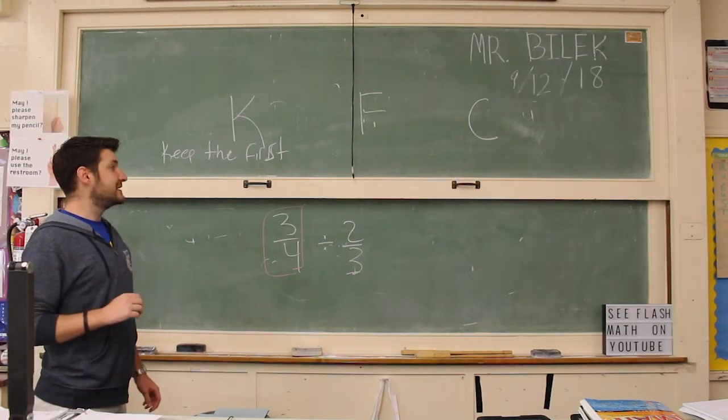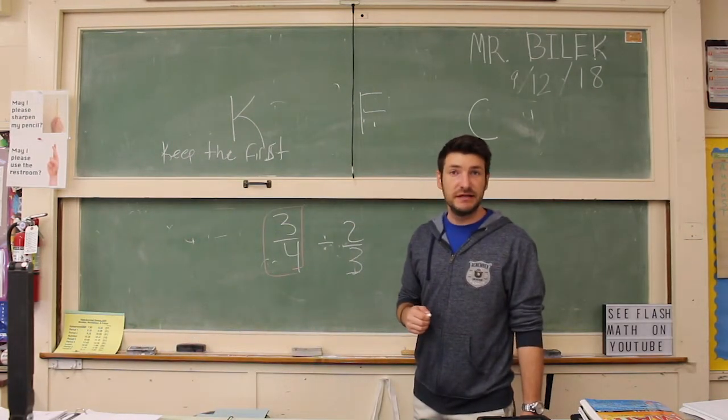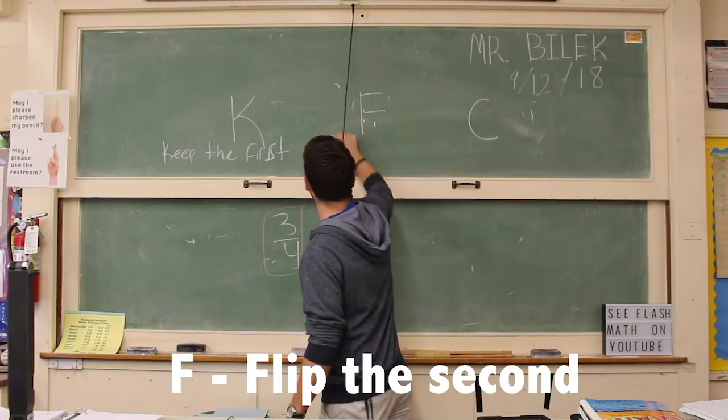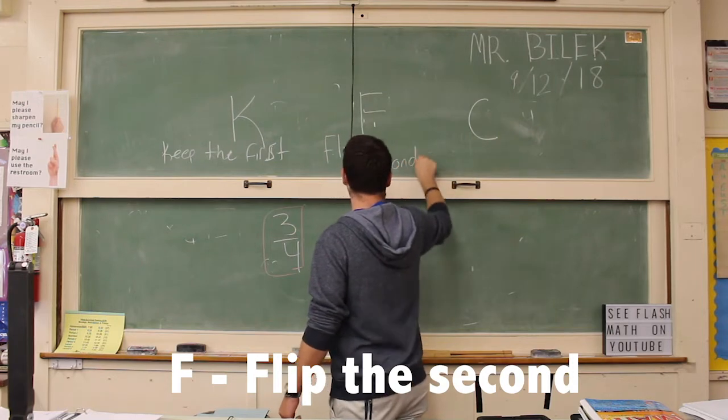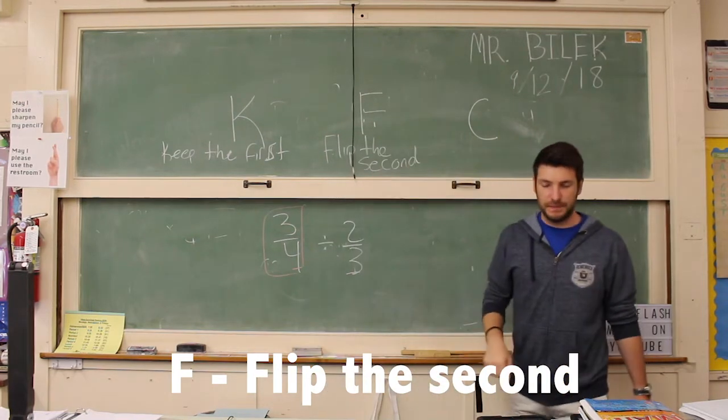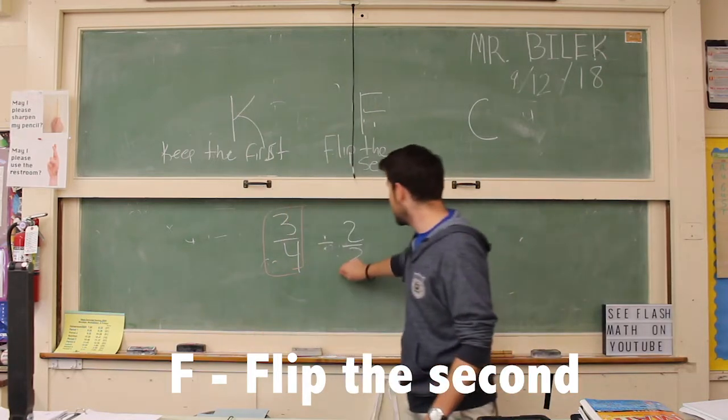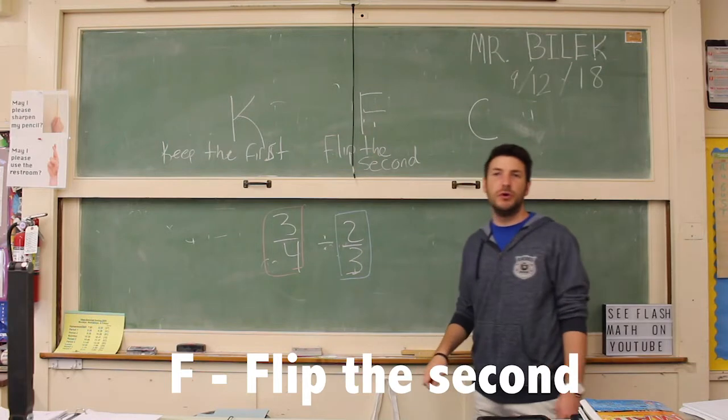The second part of our delicious herbs and spices would be this F. And the F stands for flip the second. So you're going to find the reciprocal of the second fraction. So here is our second fraction, and we are going to find the reciprocal of two-thirds.